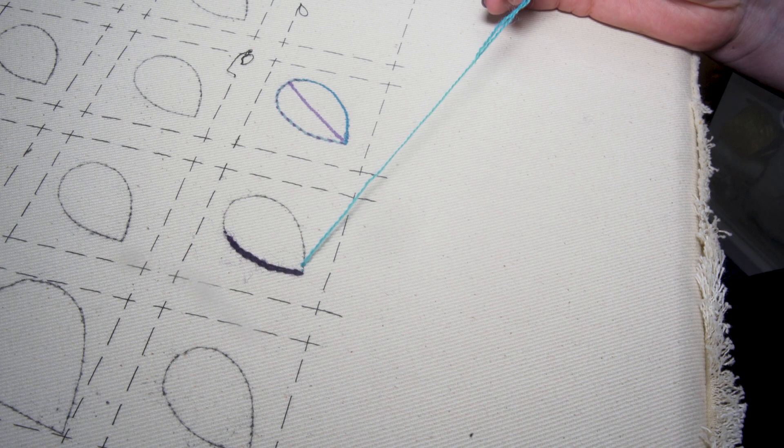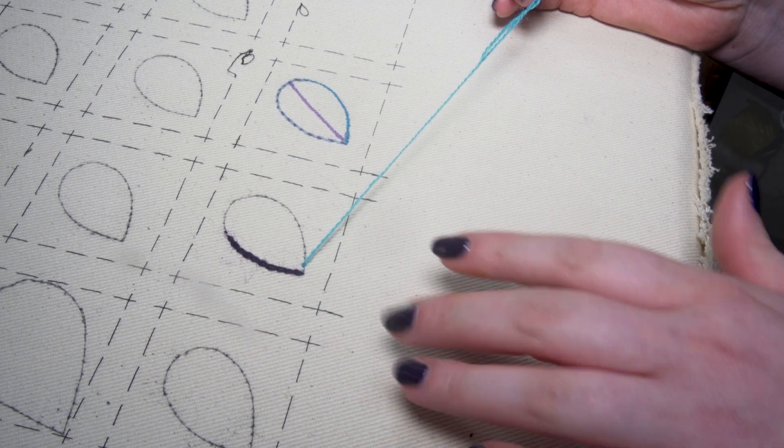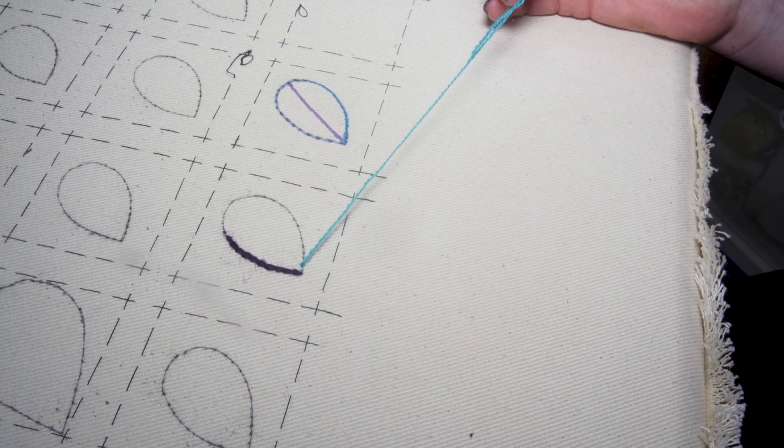Next stitch is a heavy chain. When we are stitching the heavy chain, we are working the other direction as we were doing a normal chain.